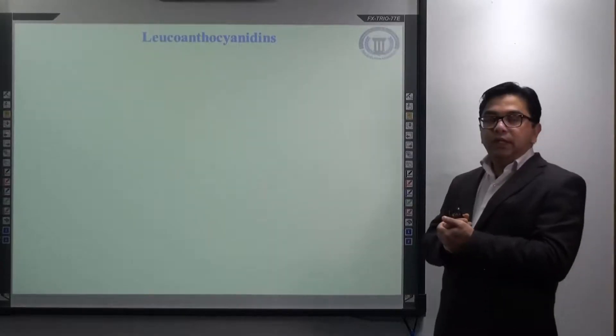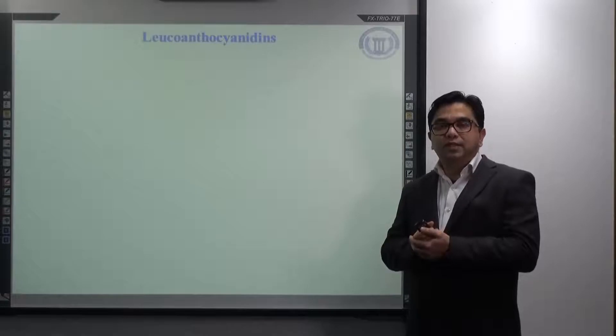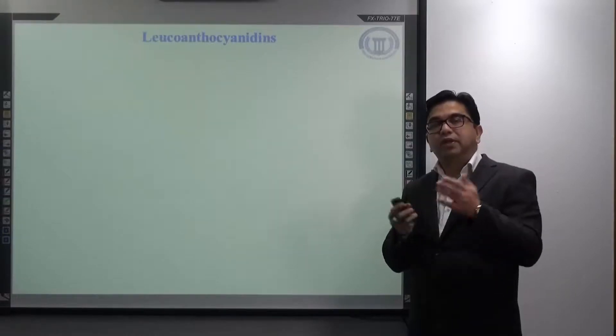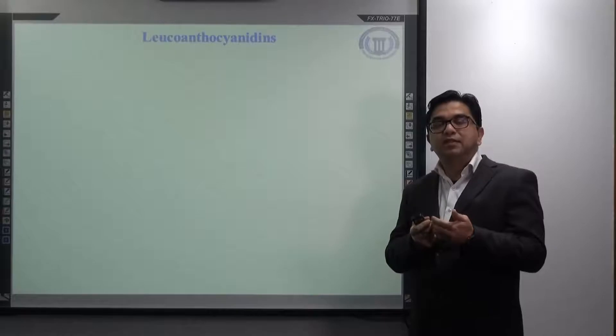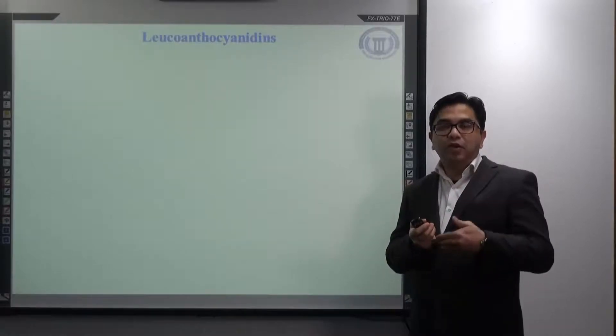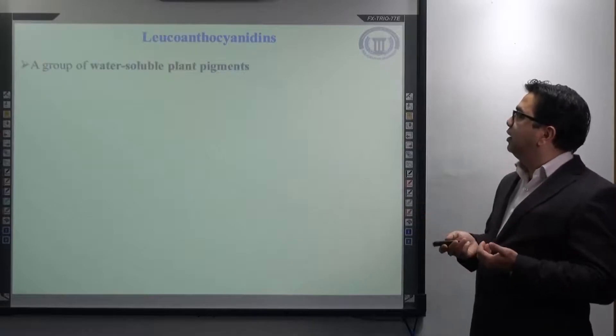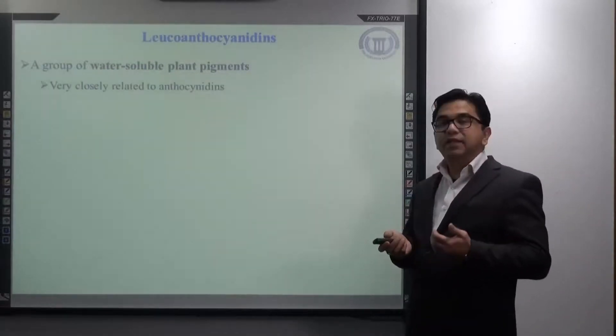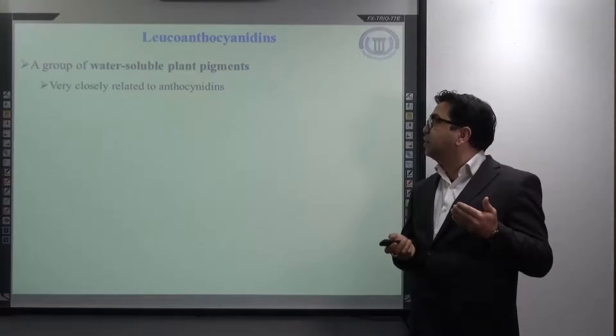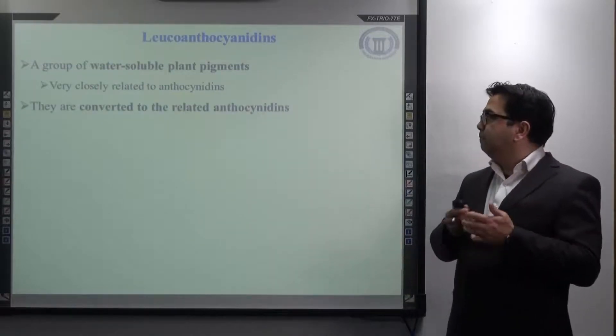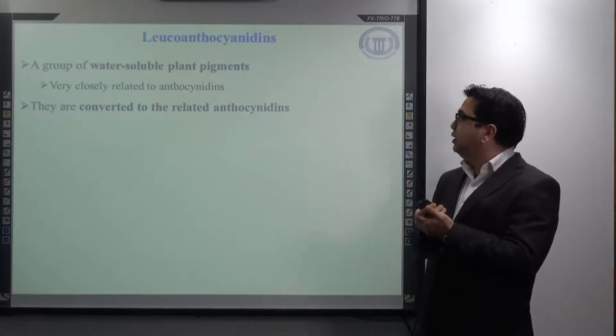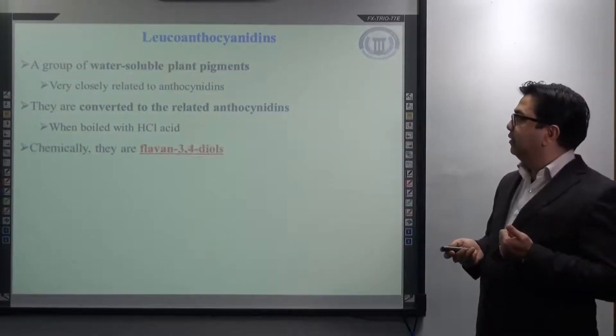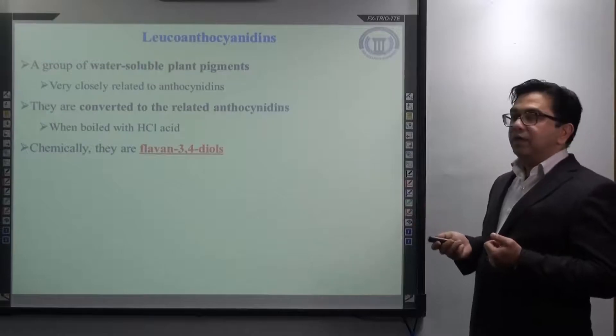Now, coming to another concept, another example, we call it as leucoanthocyanidins. Do you remember what it is? We have already discussed it. When we were discussing the classification of flavonoids, leucoanthocyanidins, it is also a type of flavonoid. Why it is called leucoanthocyanidin? It is a group of water-soluble plant pigments that is very closely related to the structure of anthocyanidins. They are found to be converted to the related anthocyanidin when it is boiled with hydrochloric acid. Chemically, they are known as flavan-3,4-diol.